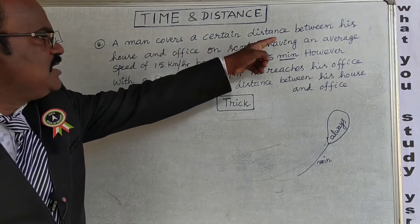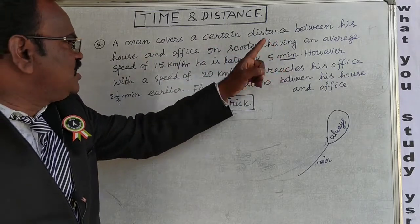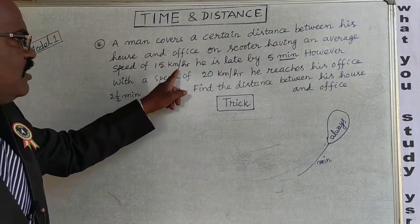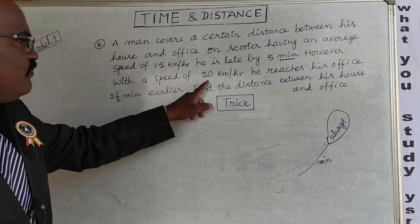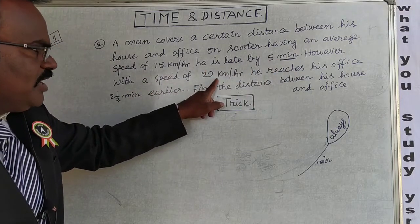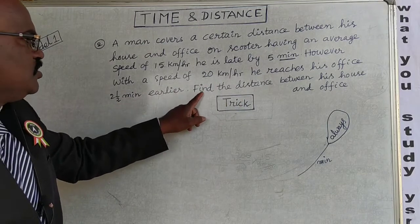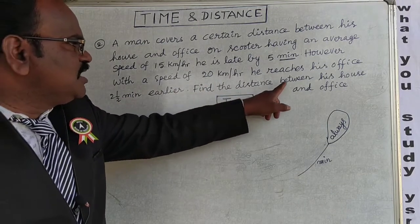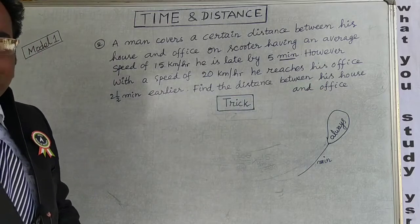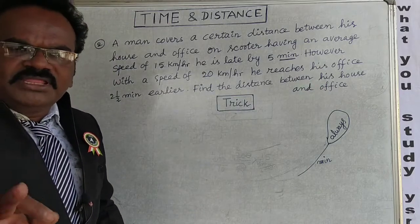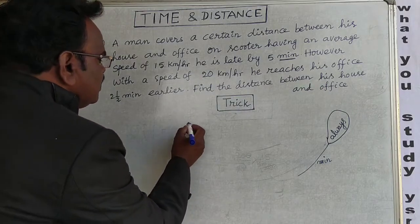Same Model One — second problem. A man covers a certain distance between his house and office on a scooter having an average speed of 15 km/h. He is late by 5 minutes. However, with a speed of 20 km/h he reaches his office 2.5 minutes earlier. Find the distance between his house and office.